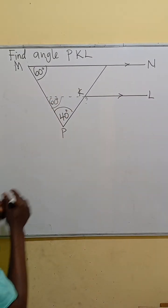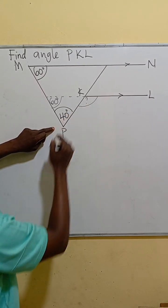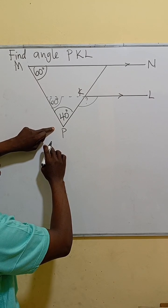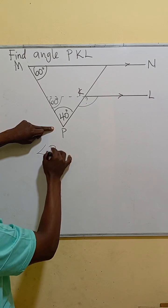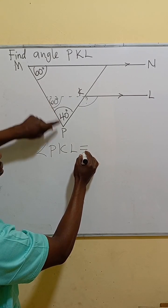60 degrees. Taking this as a triangle, this becomes an exterior angle. We know an exterior angle equals the sum of two opposite interior angles. Therefore, angle PKL is going to be the sum of these two